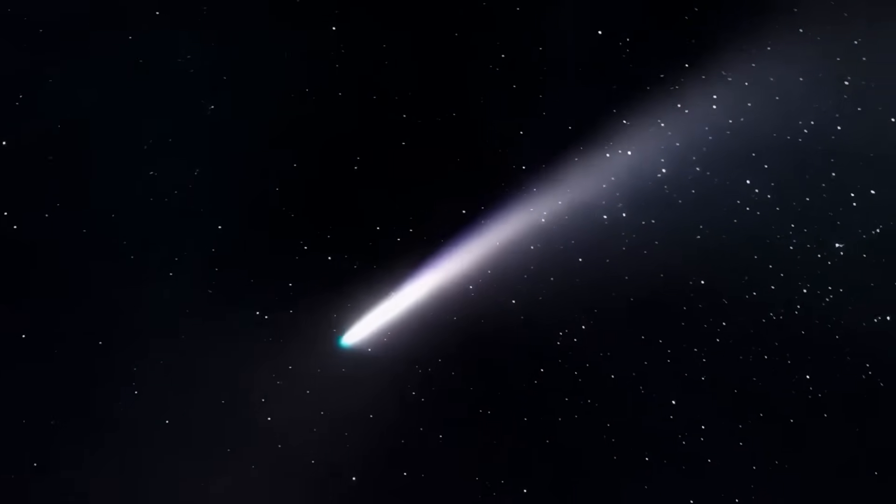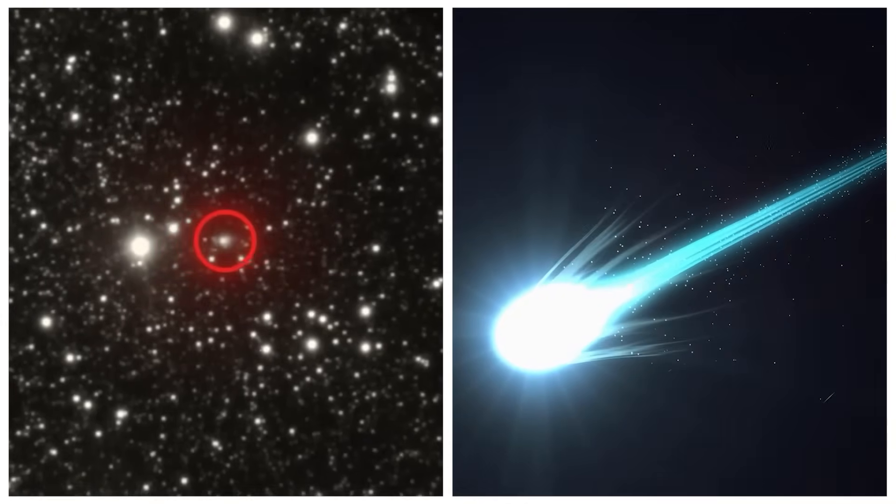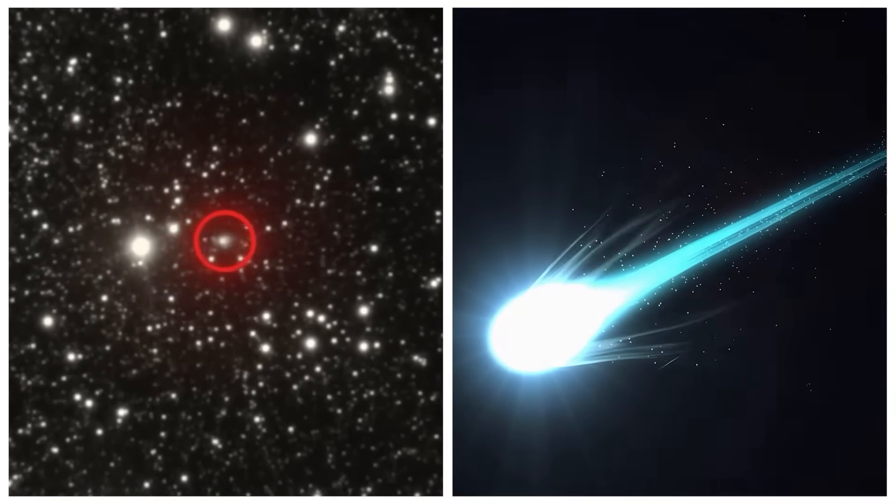At first, it was thought to be a comet, then maybe an asteroid, but the more we looked, the more 3-Eye Atlas defied every label we tried to place on it. It was too symmetrical to be natural, too silent to be alive, and far too controlled to be adrift.